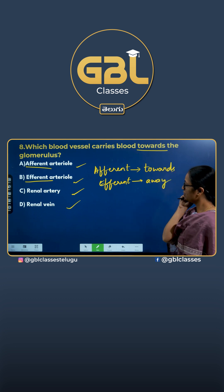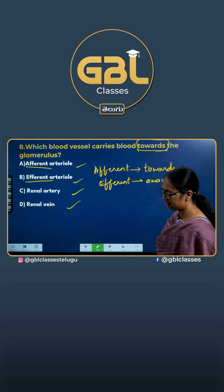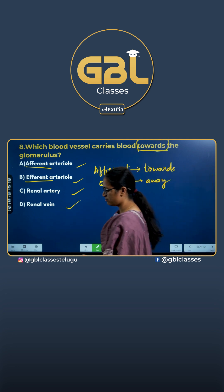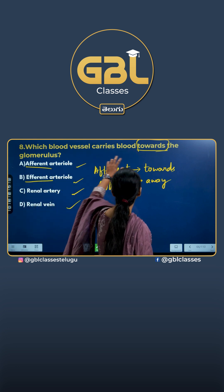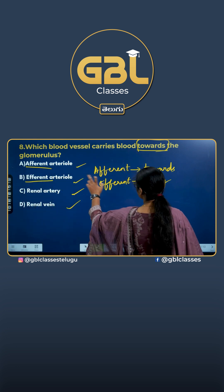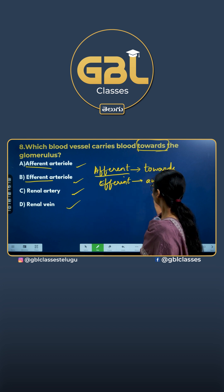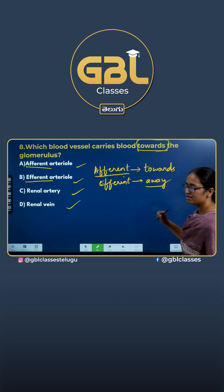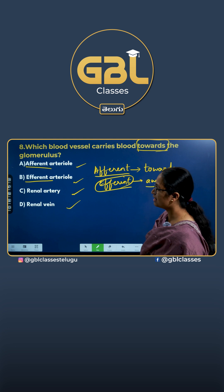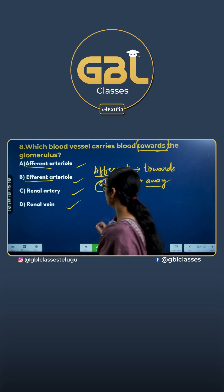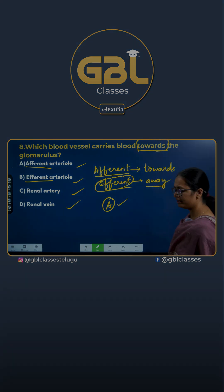This is a shortcut to remember a few terminologies in biology. The question asks about 'towards,' so we use the term afferent. The away word we use is efferent. So the answer for this question will be A — afferent arteriole.